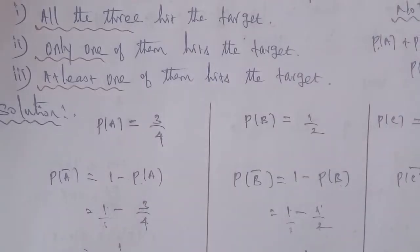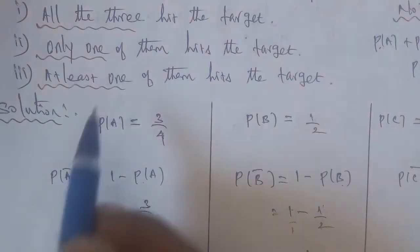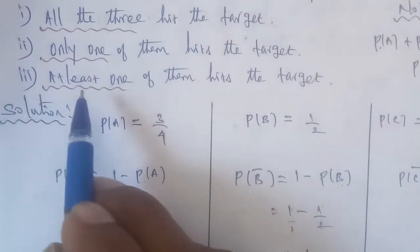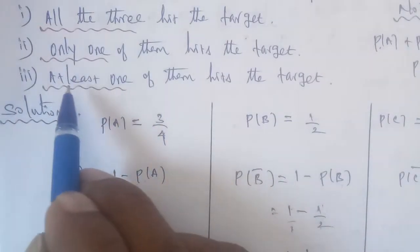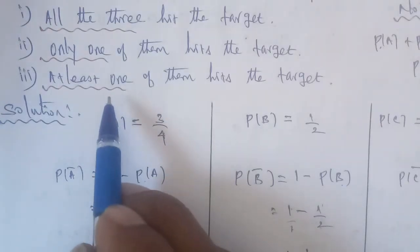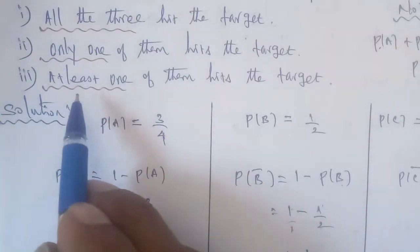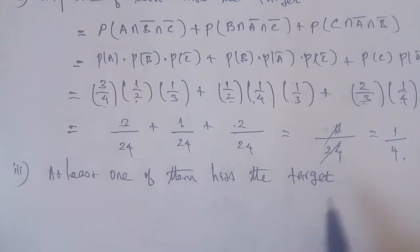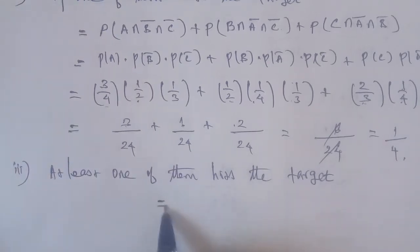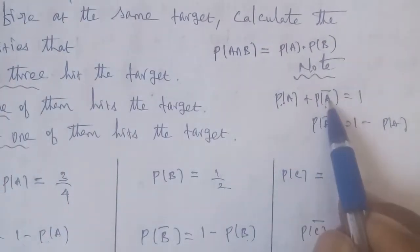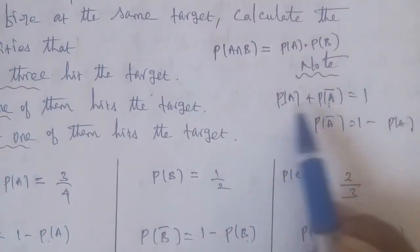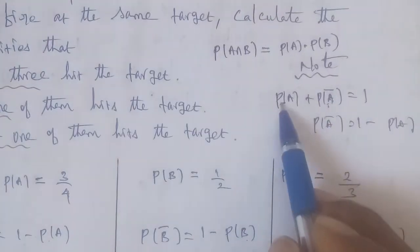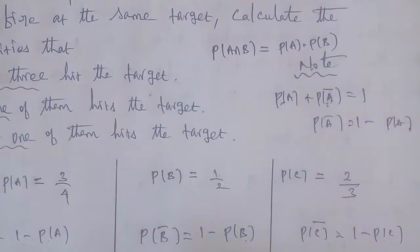Sub-question 3: At least one of them hits the target. The total probability value is 1. We use the complement: P(at least one hits) = 1 minus P(none hit the target), which is 1 minus P of A-bar into P of B-bar into P of C-bar.